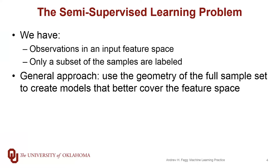In semi-supervised learning, we have a set of samples in our input feature space where some are labeled and some are not. For those that are labeled, their distribution in the input feature space might not be terribly representative of the true distribution out in the real world. These additional unlabeled samples can give us a much better picture of that true distribution. The idea is to use the entire set of samples to understand that distribution, then apply supervised learning methods.